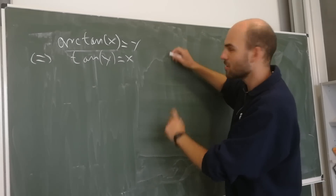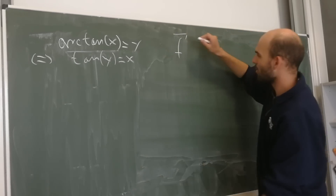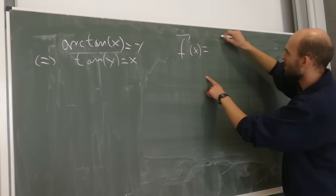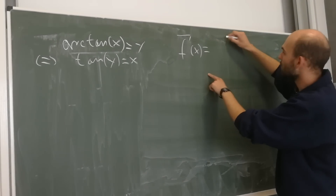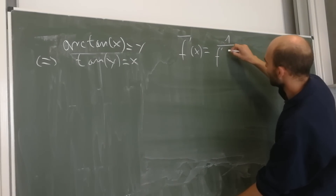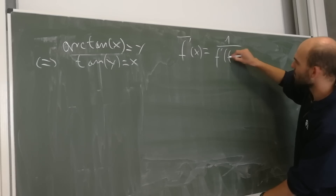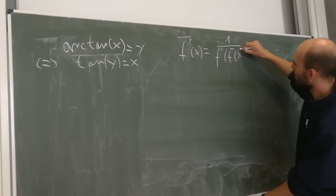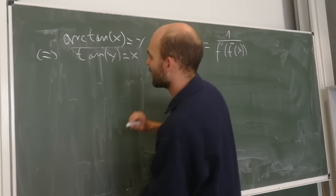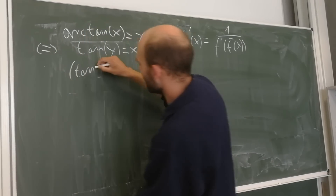We know the derivative of this, so we put the formula for inverse functions on the board. The formula says that the derivative of the inverse function is 1 over the derivative of the normal function evaluated at the inverse function.